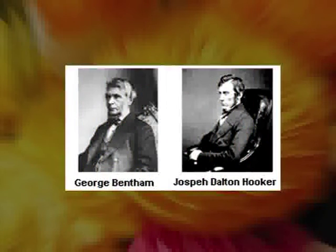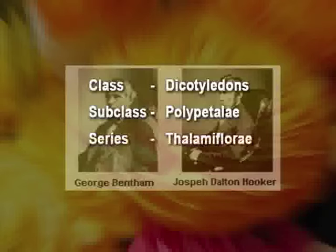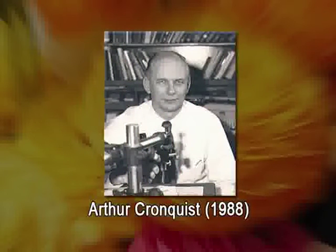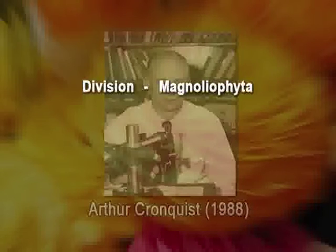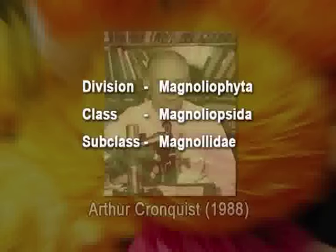Various authors and taxonomists have classified Ranunculaceae under different schemes of classification. Starting with Bentham and Hooker, two British botanists: they classified Ranunculaceae under the class Dicotyledons, subclass Polypetalae, series Thalamiflorae, and the order Ranales. Then came the classification of Arthur Cronquist, an American taxonomist working at the New York Botanical Garden, who classified Ranunculaceae under the division Magnoliophyta, class Magnoliopsida, subclass Magnoliidae, and the order Ranunculales.